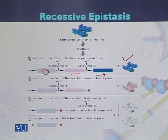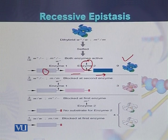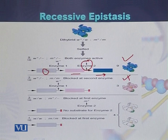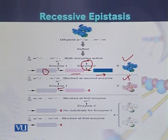If enzyme 2 is not active and does not act on the precursor, the color of the flowers will be pink. While if both enzyme 1 and enzyme 2 are not active and both do not work, then the color of the flower will be white.